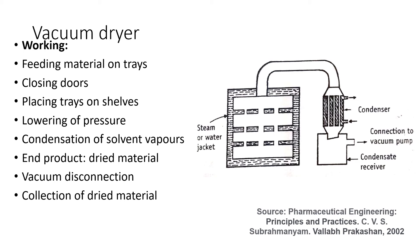Through the mode of conduction, heat transfer takes place. After receiving this heat, the solvent gets evaporated at a comparatively lower temperature — generally 25 to 30 degrees Celsius — by keeping the pressure at 30 to 60 kilopascals. The water vapor then passes into the condenser where condensation takes place. Once the dried material is obtained, the vacuum is disconnected and the dried material is collected from the chamber.